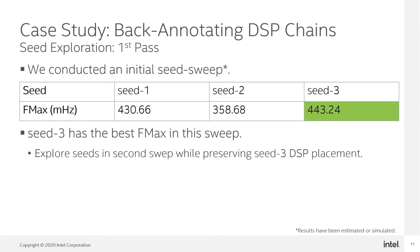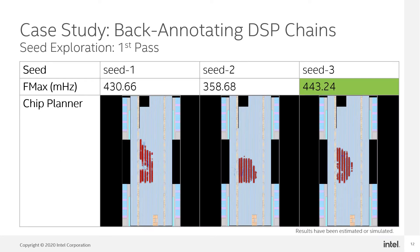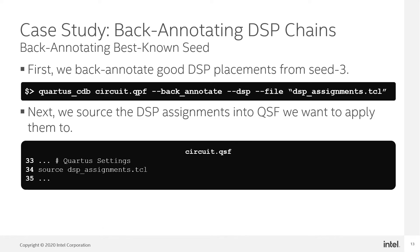We conducted an initial seed sweep which yielded a selection of different placements with great variation in their fmax. Our results show that Seed3 has the best fmax in this sweep. In our investigation, we used the chip planner to observe the different DSP placements in our initial seed sweep. In order to preserve the best known DSP placements from Seed3, we'll backannotate the assignments into a TCL file, using the Backannotate Quartus CDB shell command with the DSP and file flags.